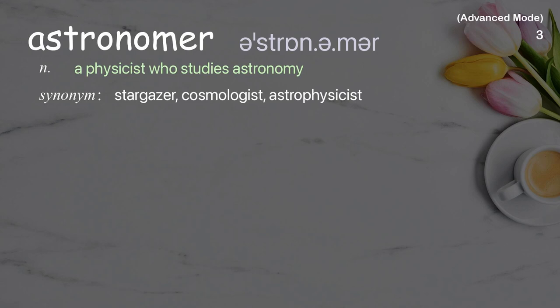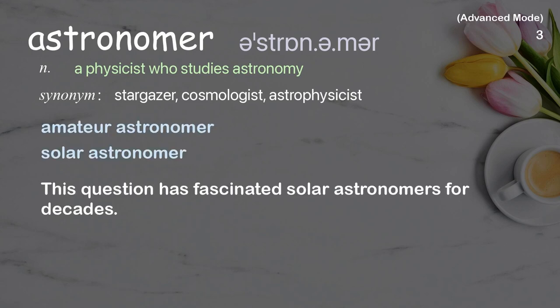Astronomer: a physicist who studies astronomy. Examples: amateur astronomer, solar astronomer. This question has fascinated solar astronomers for decades.